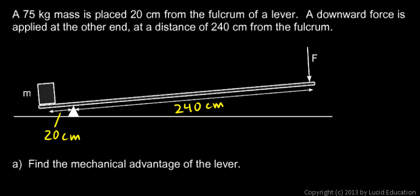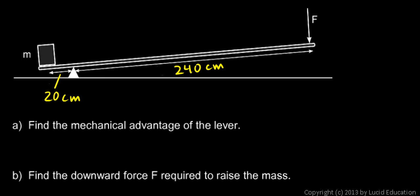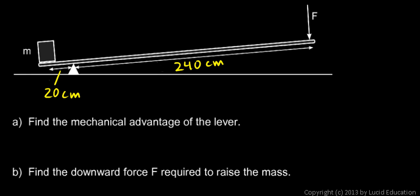We're told first find the mechanical advantage of the lever. Well, the mechanical advantage will be the ratio of these distances, the 240 and the 20. So I just do the math: 240 centimeters divided by 20 centimeters, and the units cancel out.